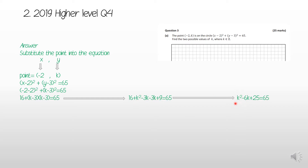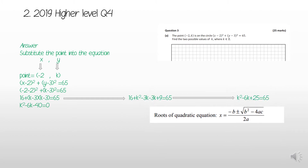We notice there is a k² term, which means this is a quadratic equation. Therefore we can use the quadratic formula to solve it. For the quadratic formula, everything needs to be on one side equal to zero. So we subtract 65 from both sides: k² − 6k − 40 = 0.